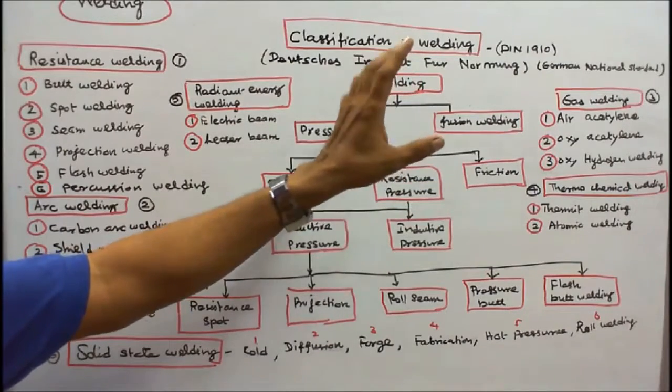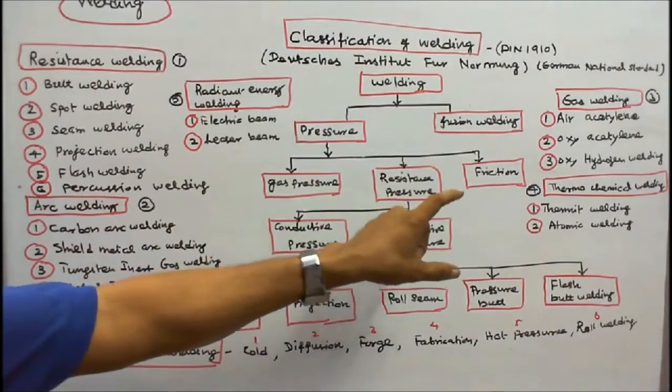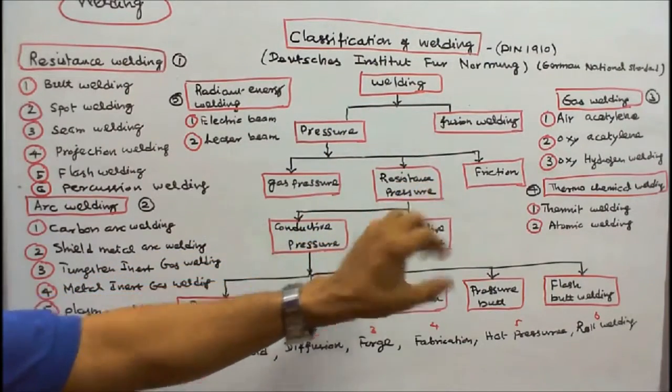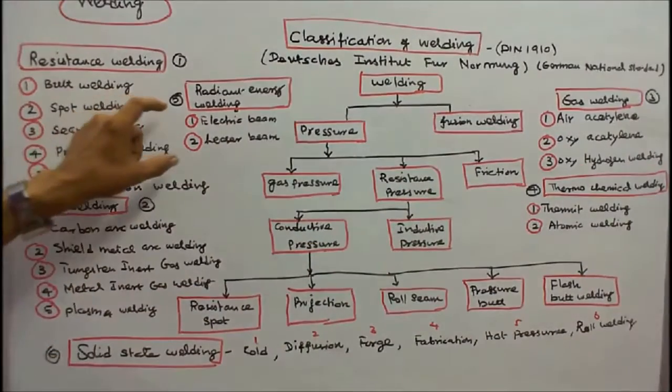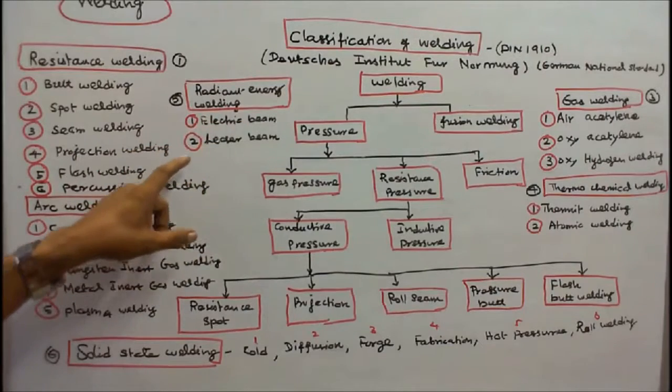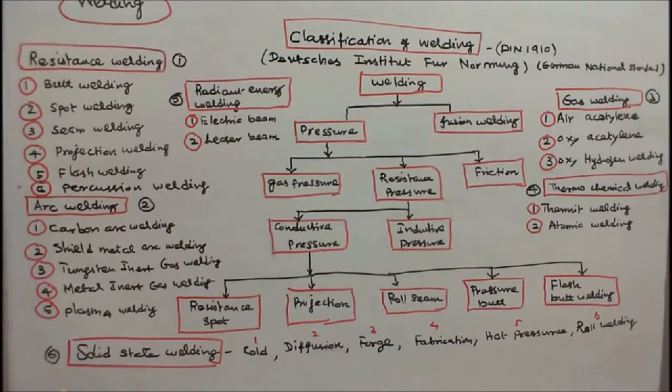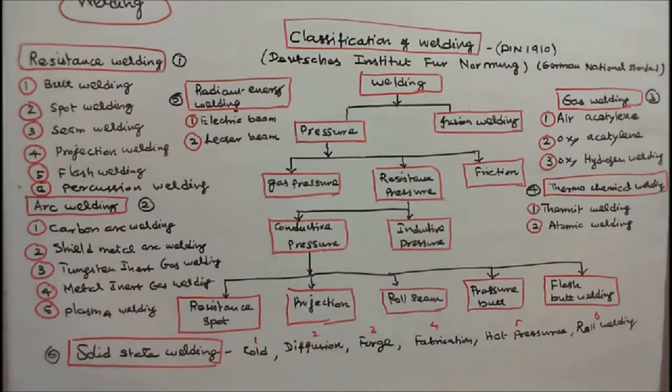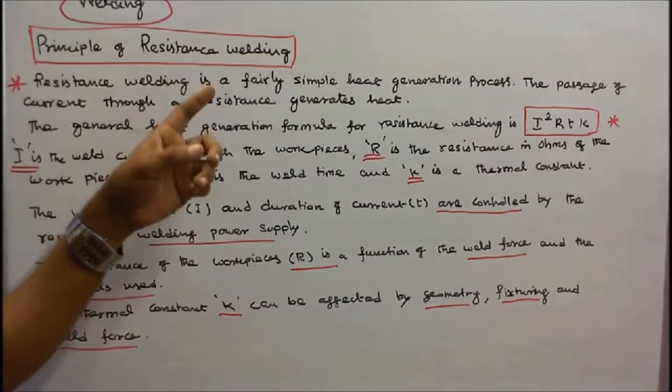There are two types of thermochemical welding: one is thermic welding, the second is atomic welding. There are two types of radiant energy welding: one is electric beam welding, second is laser beam welding. There are six types of solid state welding: one is cold welding, second is diffusion welding, third is forge welding, fourth is friction welding, fifth is hot pressure welding, sixth is roll welding.